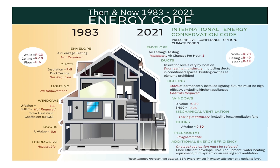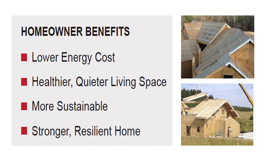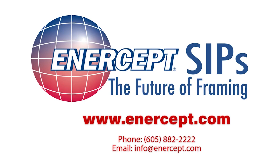The building codes have been changing over the past few years. Building a new home to the 2021 International Energy Conservation Code complies with the Department of Energy's Zero Energy Ready Home program. The DOE's Zero Energy Ready Home is a high-performance home that is so energy efficient that a renewable energy system could offset most or all of the home's annual energy use. If your goal is to provide a comfortable, sustainable home for you and your family, SIPs is the direction you want to go. Click the link below to find out more about building with Intercept SIPs.